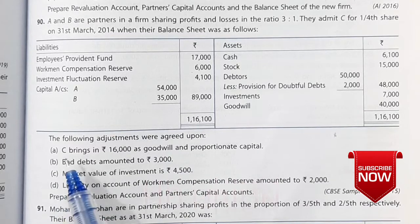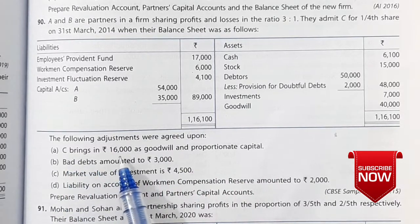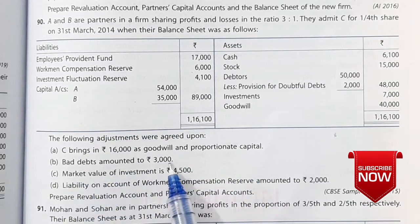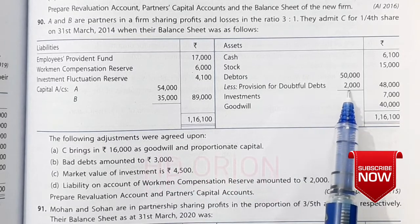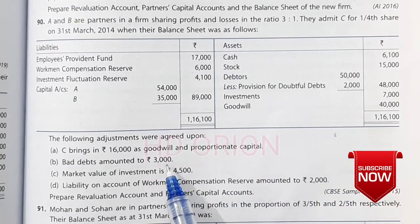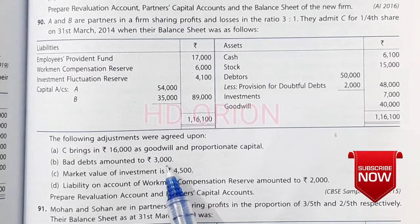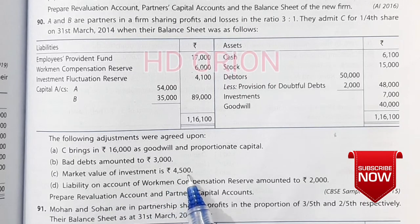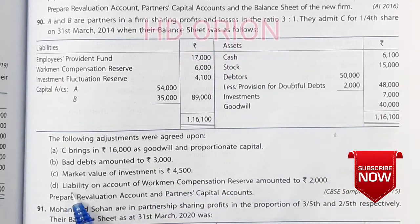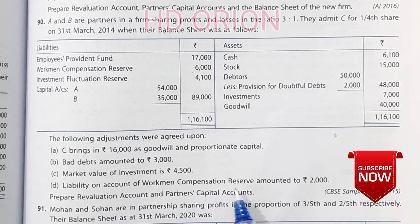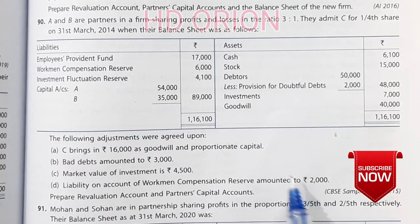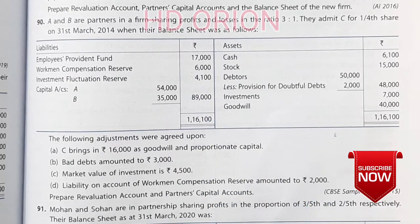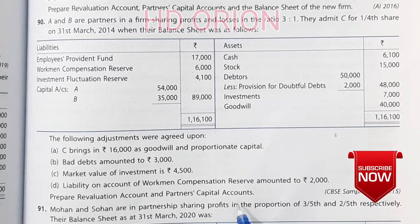Further information says that C brings Rs. 16,000 as goodwill and proportionate capital. Bad debts amounted to Rs. 3,000 but provision is only for Rs. 2,000, so Rs. 1,000 load will go to the revaluation account debit side. Market value of investment decreased by Rs. 4,500. Liability on account of Workman Compensation Reserve amounted to Rs. 2,000, so the difference of Rs. 4,000 will be given to old partners in old ratio. Prepare revaluation account and partners capital account.